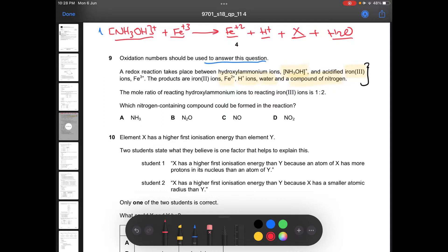The question says also, the mole ratio of reacting hydroxyl ammonium ions to reacting iron 3+ is 1 to 2. So we can go to the equation in here, and we can say the ratio between the reactants is 1 to 2.